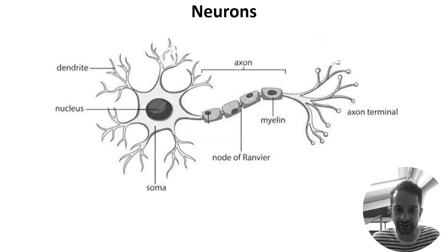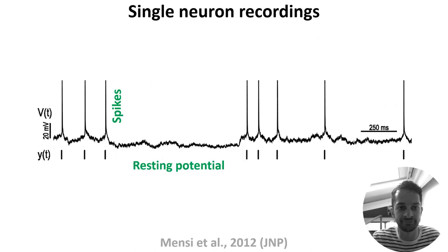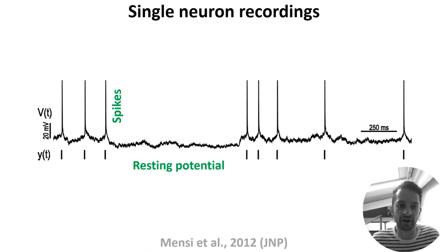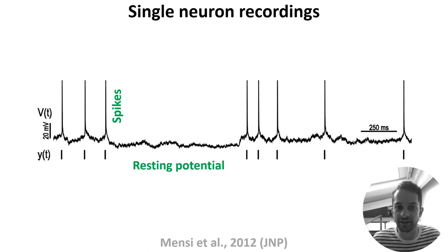Let's start by looking at the electrical activity of a single neuron. Here we have time in milliseconds on the x-axis and voltage in millivolts on the y-axis. Exactly how researchers acquire this sort of data depends on several factors, but in general you need an electrode, an amplifier, and a specimen to record from, like an isolated neuron in a dish or even a human brain during surgery.